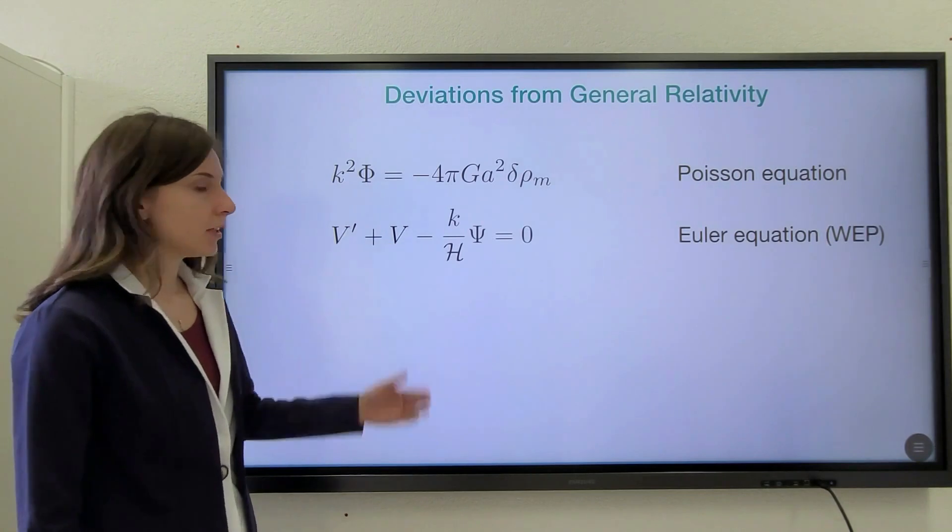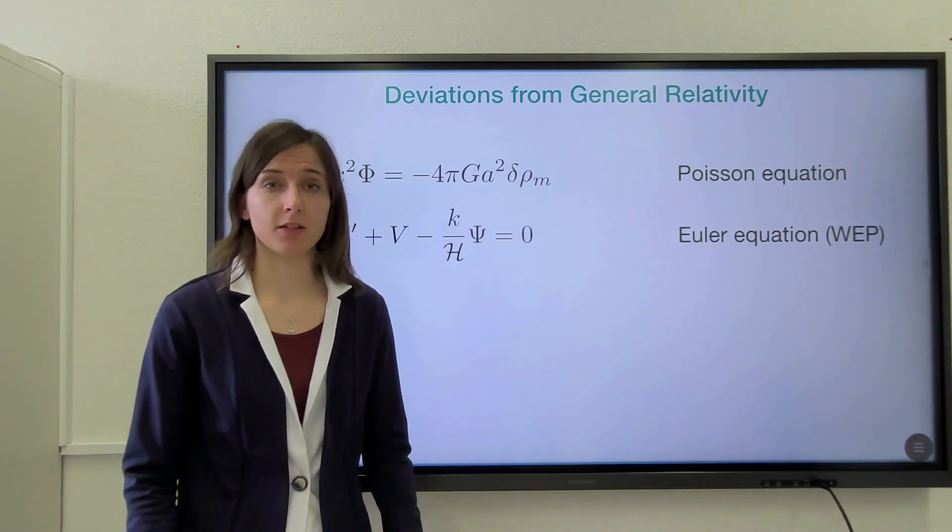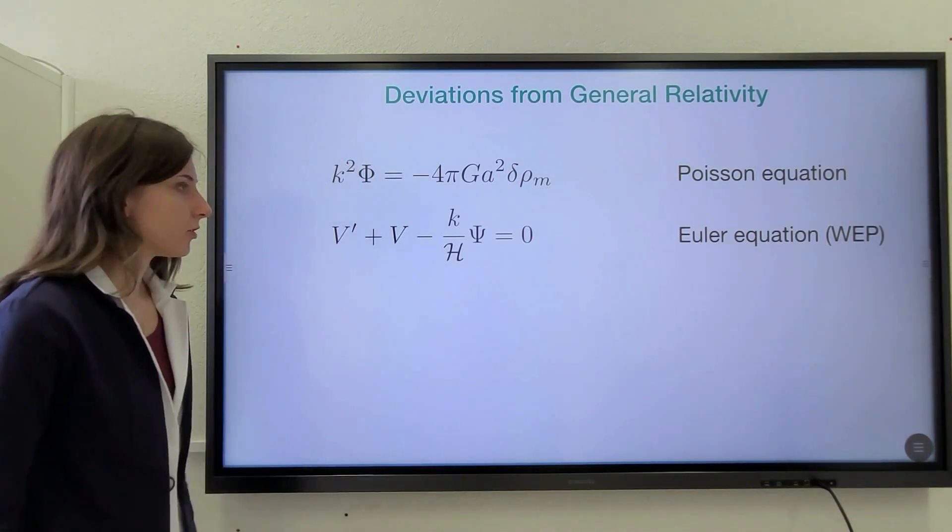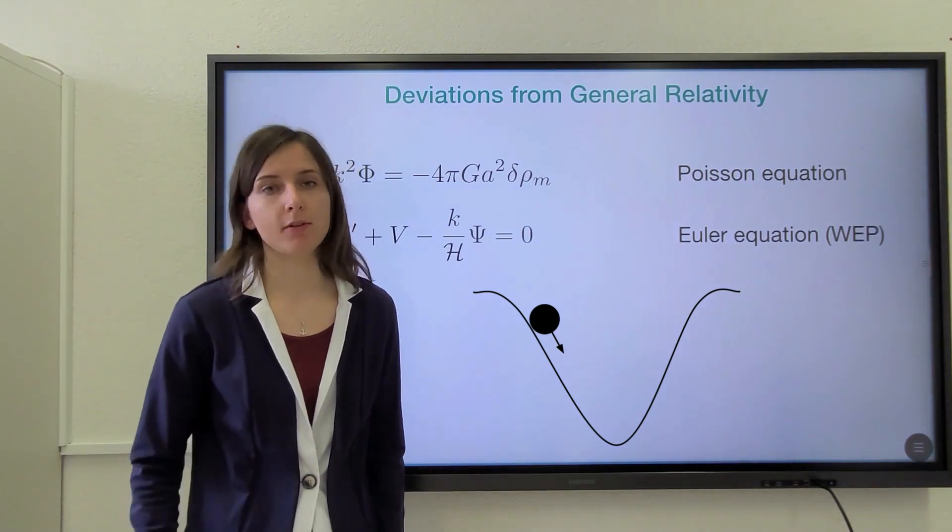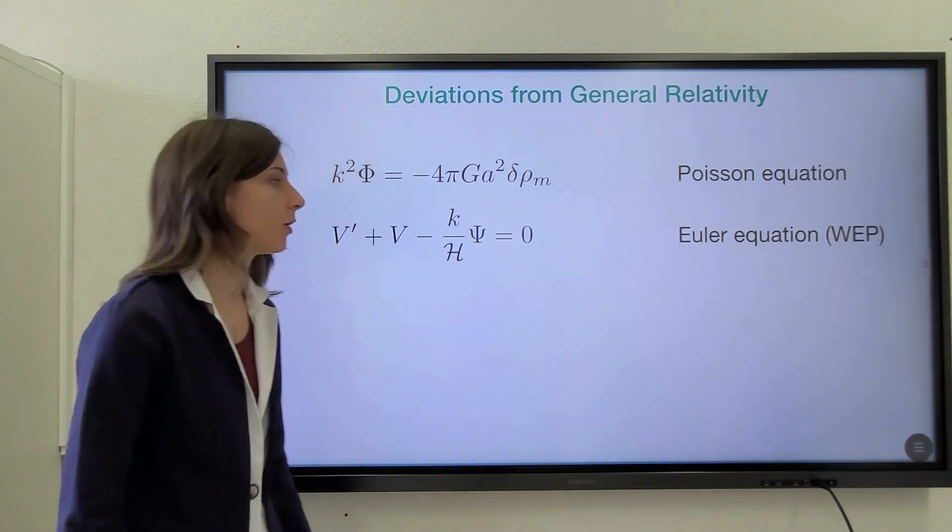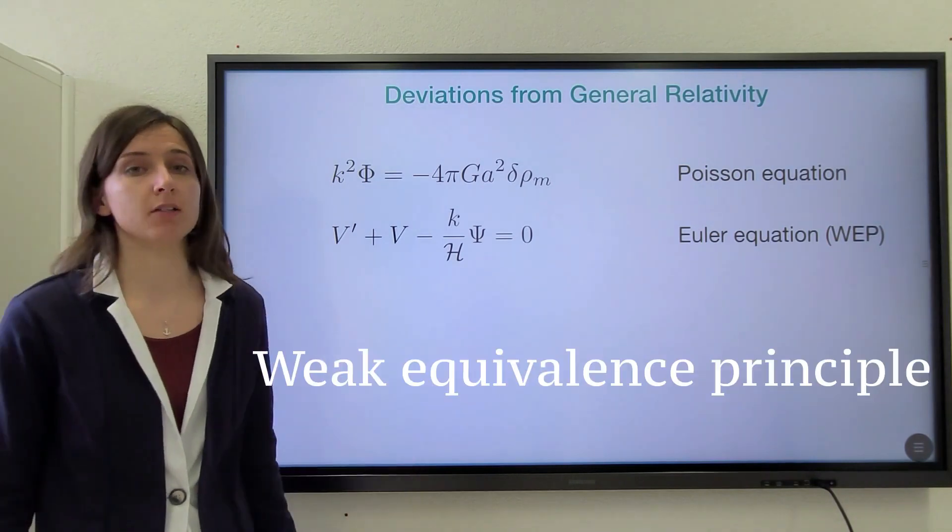Namely the Poisson equation and the Euler equation. The Poisson equation describes the way in which matter clusters, whereas the Euler equation encodes the way in which matter falls into gravitational potentials, and thus encodes the so-called weak equivalence principle.